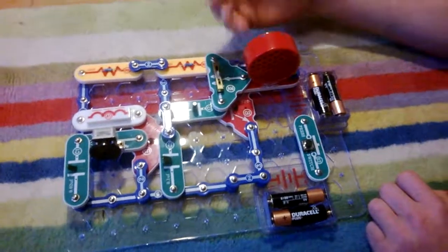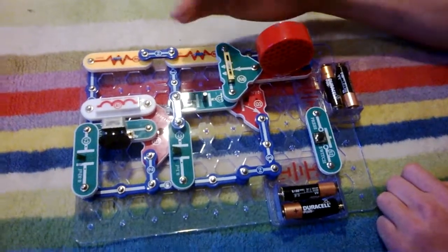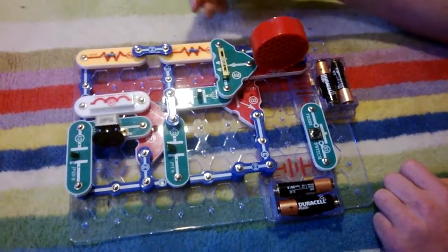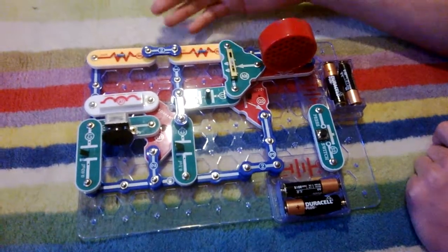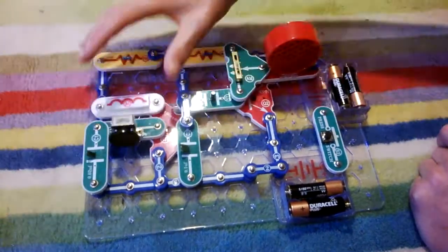And then right underneath that, we have an NPN transistor connected to a capacitor of about 10 microfarads. And then you need quite a lot of resistance here, about 110,000 ohms of resistance. And that all links back to here.